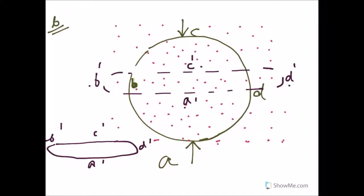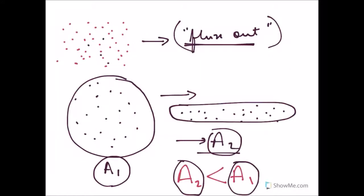So the new shape is A dash B dash C dash D dash. And we have noticed that the circular loop was placed in a magnetic field shown by dots. This means that the field lines are coming out of the page, in other words they are flux out.